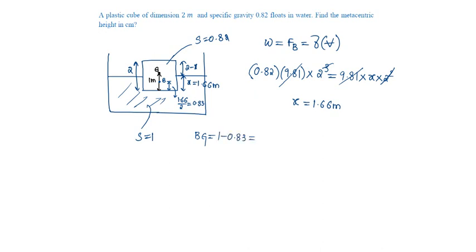Say this is M, metacentric height. The metacentric height GM will be equal to BM minus BG. BM is I by submerged volume minus BG.